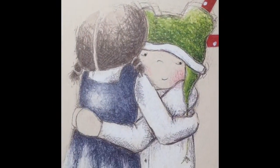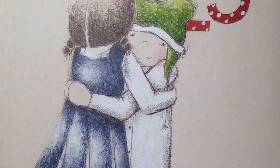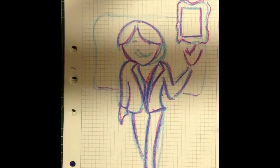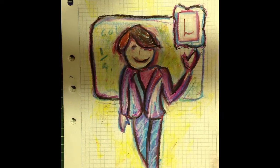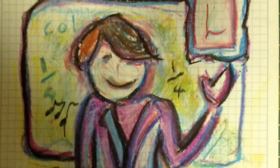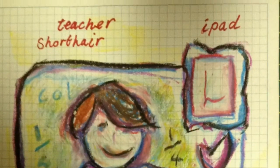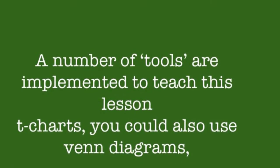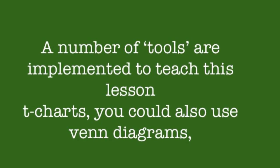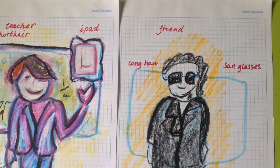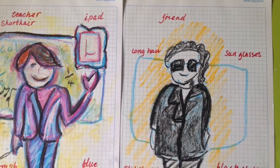This lesson is preparing students for writing multimodal ways of text — why it is good to be yourself. First, the teacher models drawing themselves using color and symbolism. Then they add labels to these symbols. For example, the label of an iPad may symbolize that the teacher likes technology. This labeling scaffolds the writing process. The teacher then compares and contrasts the characteristics shown on the drawing with a friend's characteristics.